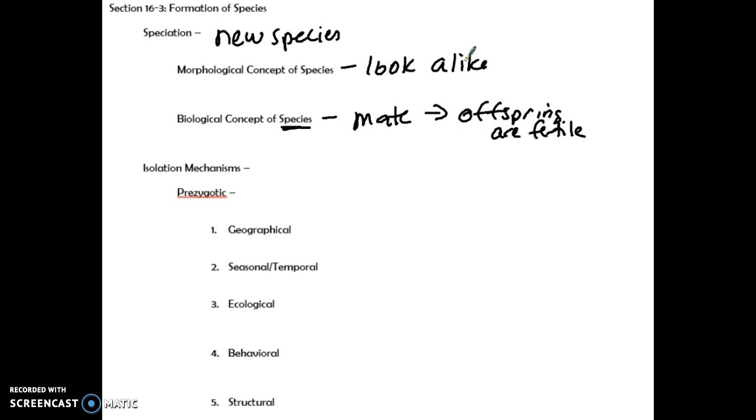So what is going to create these new species? There are these things called isolating mechanisms. And isolating mechanisms are barriers that help create species. The first grouping are prezygotic. That means before a zygote, and a zygote is a fertilized egg. So to make it prezygotic, these are barriers that have to prevent a sperm and egg from uniting. There are five examples I will discuss.